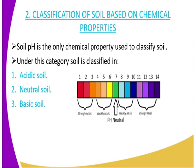The second classification of soil properties is based on chemical properties. The only chemical property used to classify soil is soil pH. The P stands for power or potential, and the H stands for hydrogen. So pH stands for potential for hydrogen. By definition, soil pH is the level of alkalinity or acidity of a given sample of soil. Under this category, we classify soil into three categories: acidic soil, neutral soil, and basic soil.